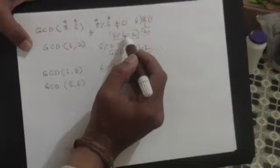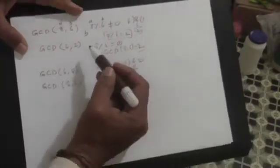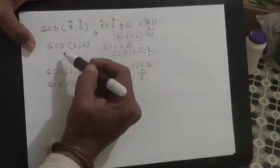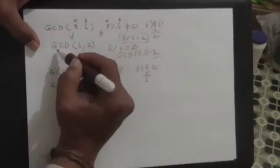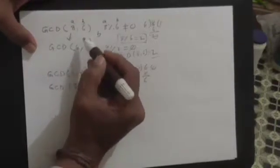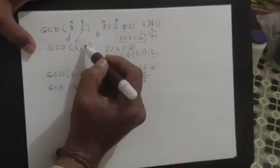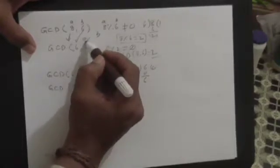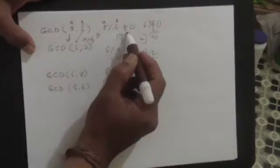So remainder is not 0. Therefore, we write that the GCD of 8 and 6 is now reduced to the problem of writing as GCD of 6 and 2. So this comes here. And this 2 is nothing but A mod B. So that's what here it is A mod B.